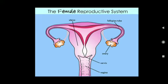When the ovary releases the egg, the fallopian tube (i.e. oviduct) carries the ovum from the ovary to the uterus. The fallopian tube or oviduct is the site of fertilization.